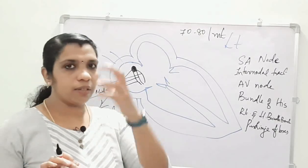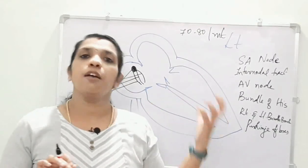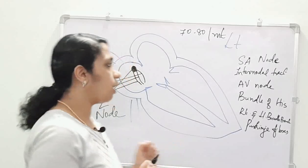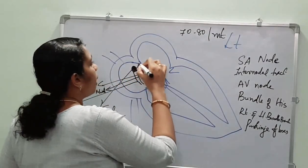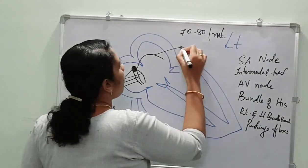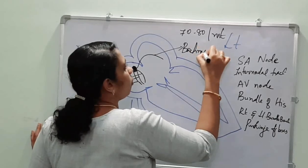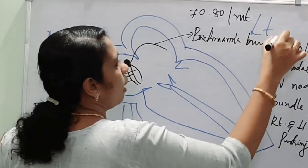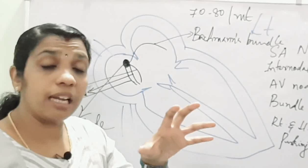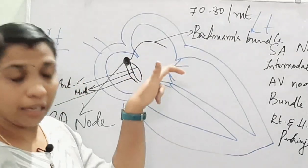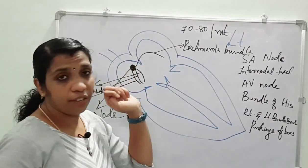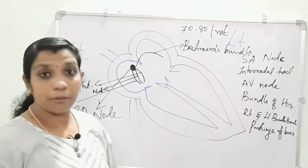There are three internodal tracts which arise from the SA node and carry impulses from it. In addition to these three internodal tracts, there is another specialized internodal tract from the SA node which supplies the left atrium. This is known as Bachmann's bundle or Bachmann's tract.